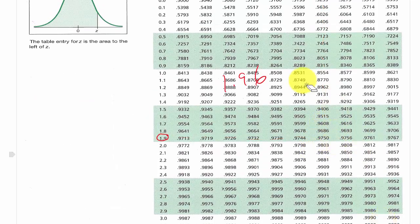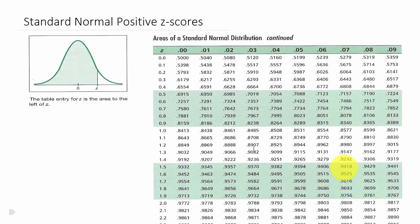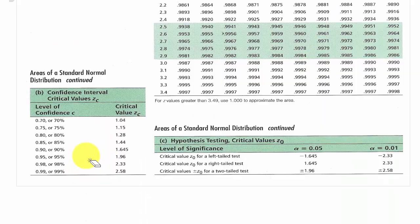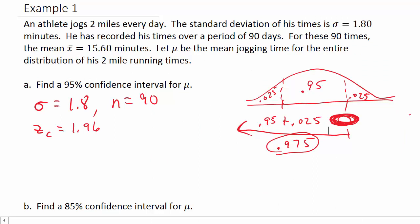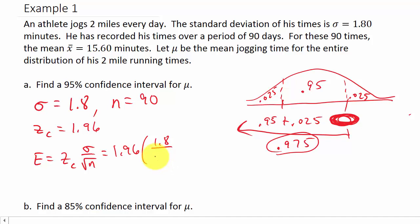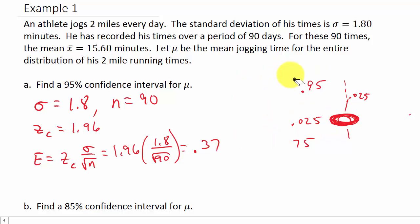Now we compute E. E equals Z sub C times sigma over the square root of N, which is 1.96 times 1.8 over the square root of 90. That gives us E equals 0.37.